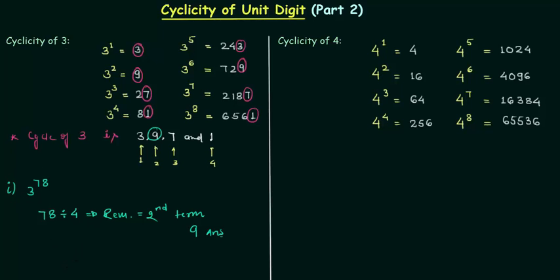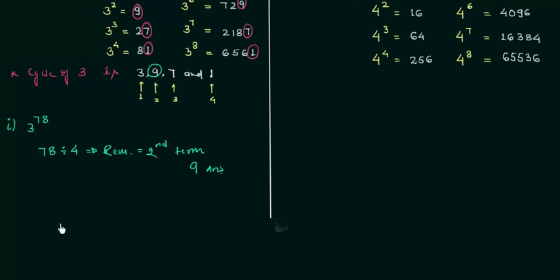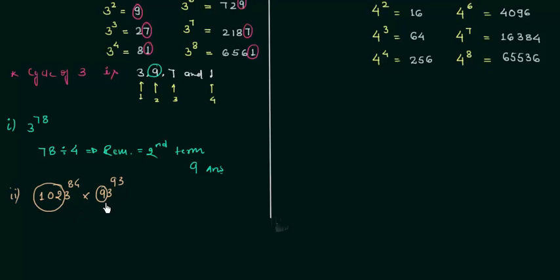Now the second problem: 1023 raised to power 84, multiplied by 93 raised to power 93. We will neglect 102 from 1023 and neglect 9 from 93 because we only need to focus on the units place. So we are left with 3 raised to power 84 multiplied by 3 raised to power 93, and we can easily find the digit at the unit place because we know the cyclicity of 3.